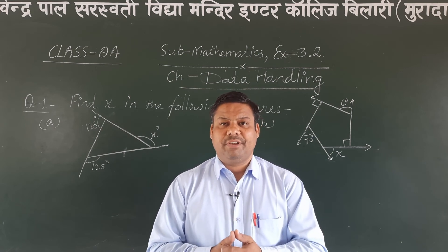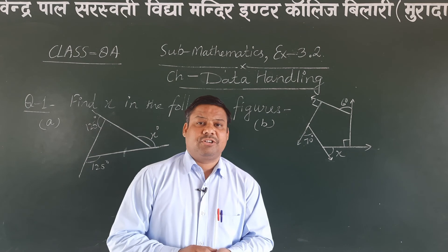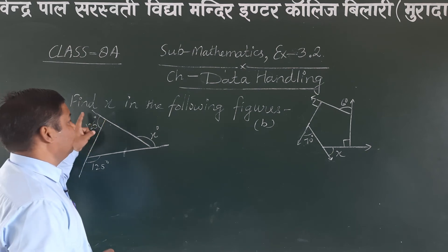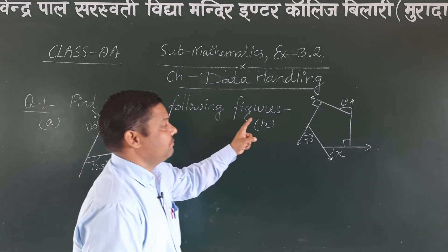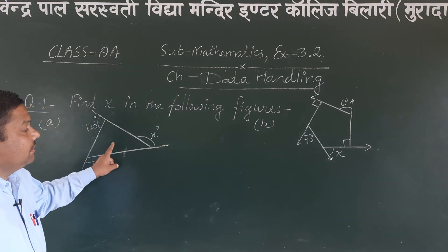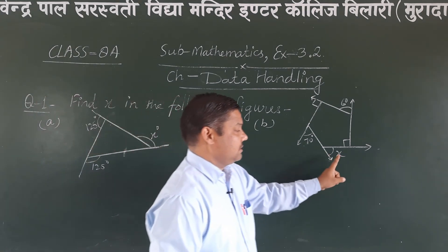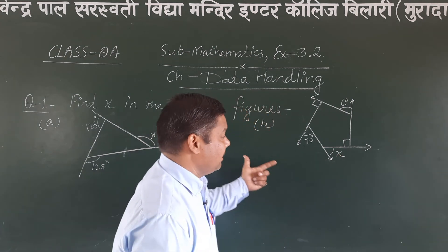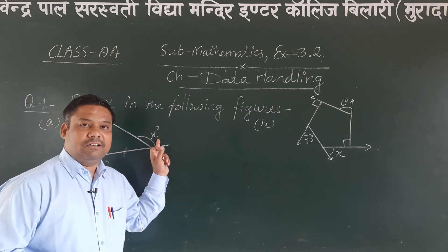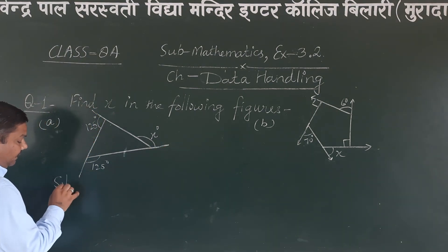So now we come to the exercise. In this exercise your first question says: find x in the following figures. You can see the x angle in this figure. But what is the measurement of this angle — we don't know. So we have to find out the value of this x angle. Now in the solution we can write.